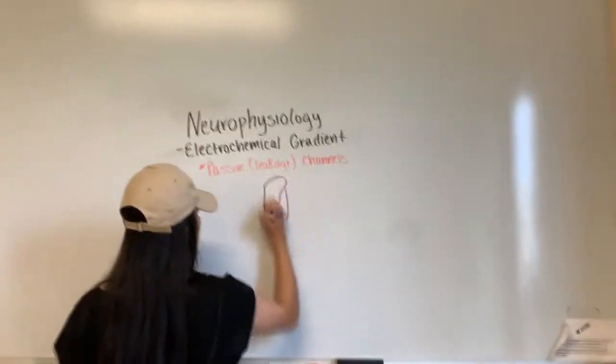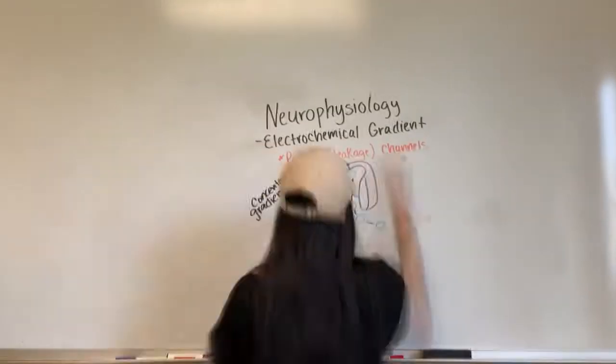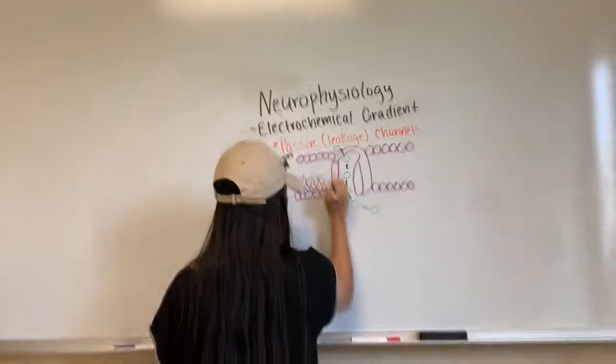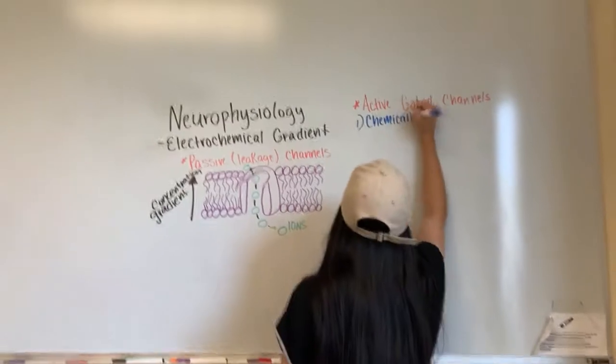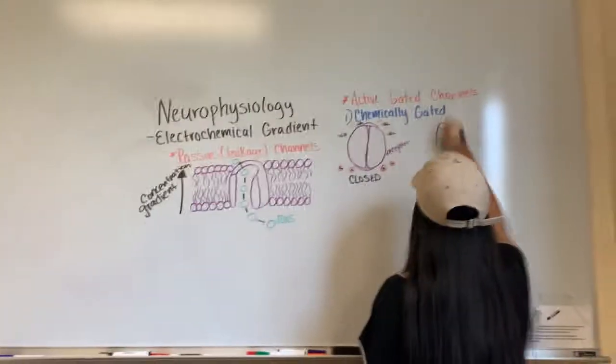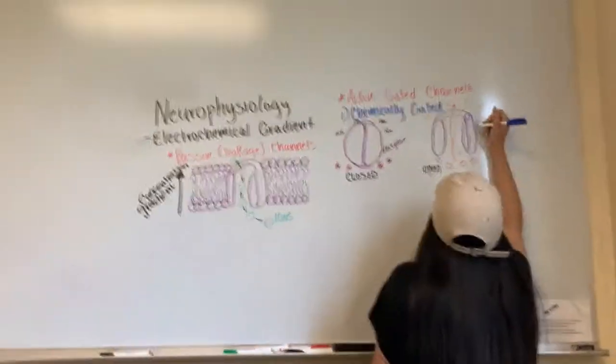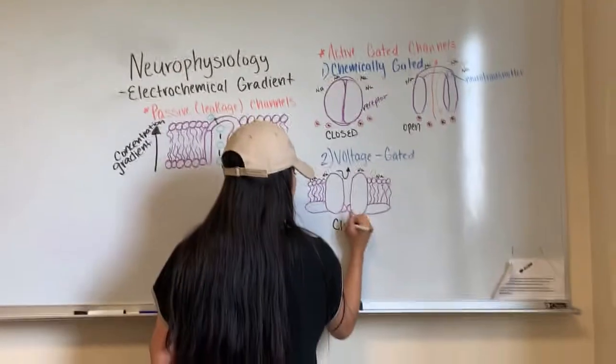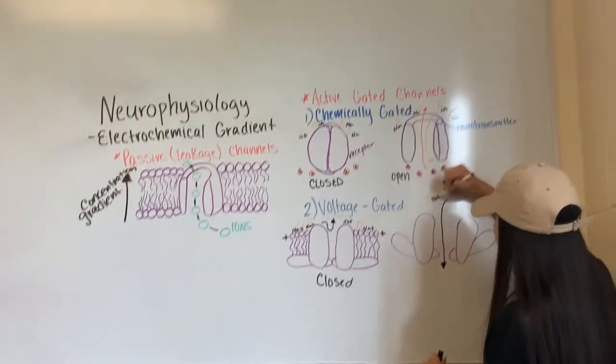Electrochemical gradients. There are passive channels and active channels. Passive channels, also known as leakage channels, are open all the time. Active channels, also known as gated channels, open and close, usually given by a signal. Chemically gated are when neurotransmitters make them open and voltage gated usually have to be shocked to open or an electrical charge makes them.